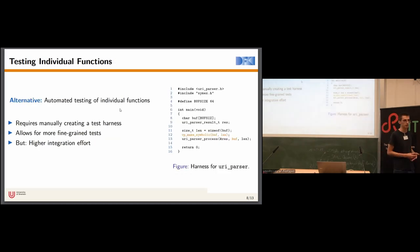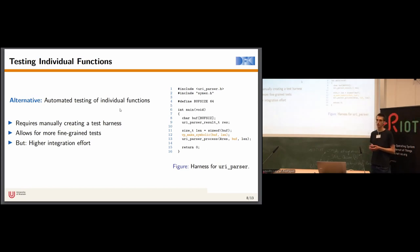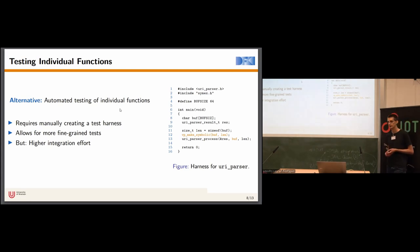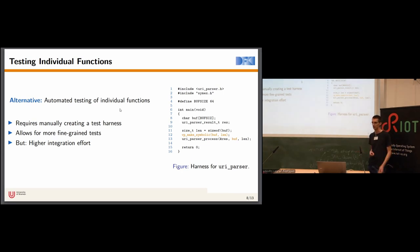There's also an alternative approach we experimented with, where we test individual functions of RIOT modules. This is especially useful if you want to test a RIOT utility module. Contrary to the peripheral injection approach, this requires manual effort to create a test harness, but it allows for more fine-grained tests of individual functions.